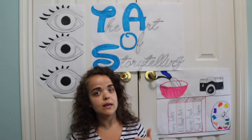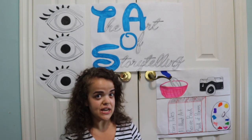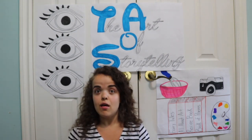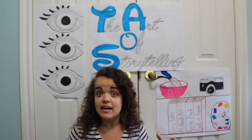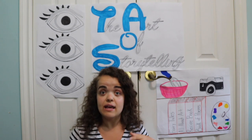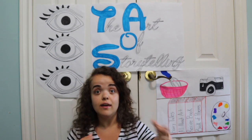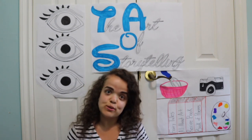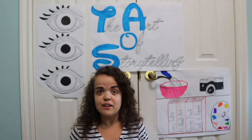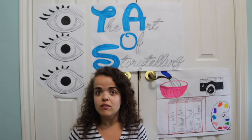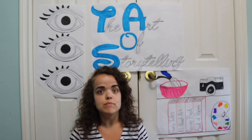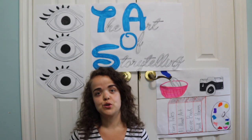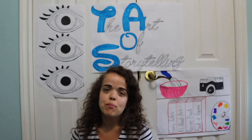In a recipe, your beginning is your ingredients, the middle is how you do it — the process, the waiting, the cooking, the mixing — and then the end, the result, is what you created. So culinary, music, art, those are all forms of storytelling.